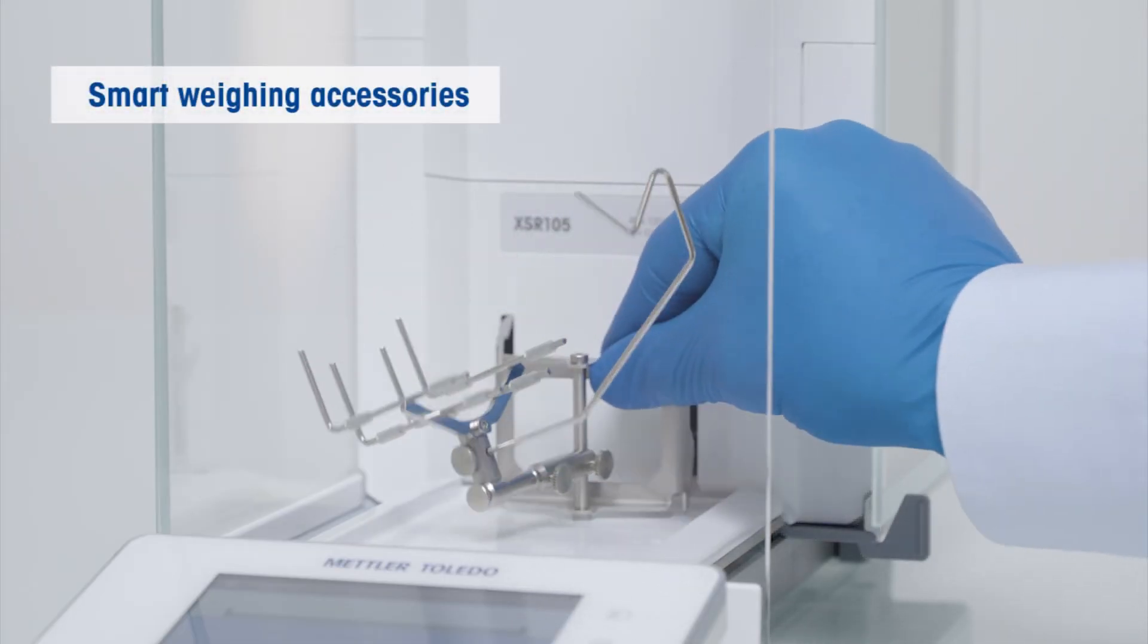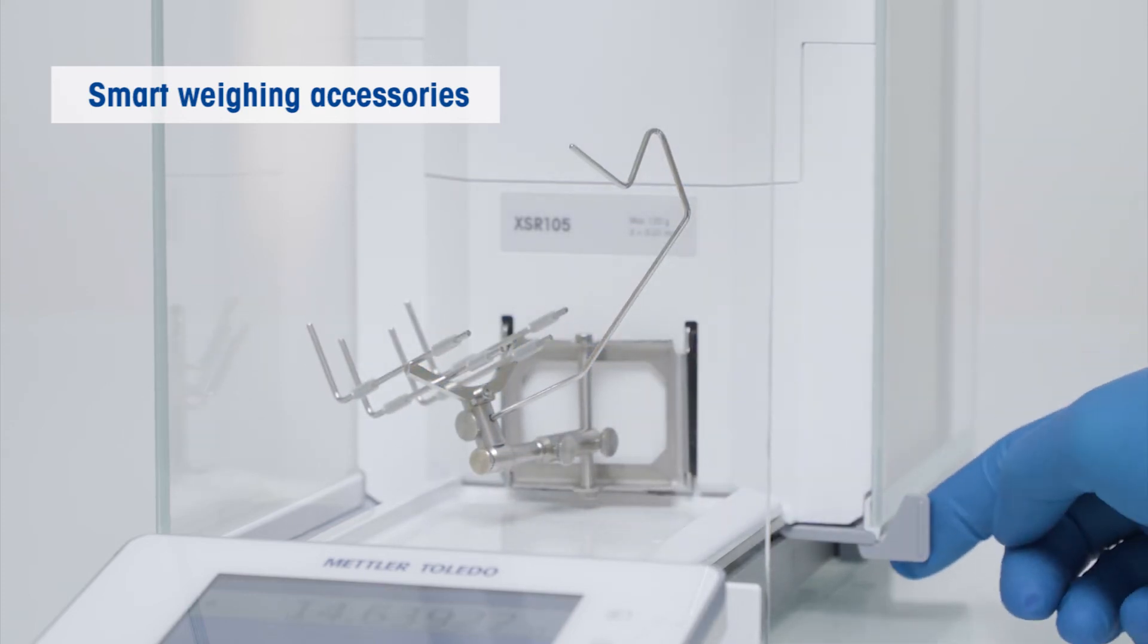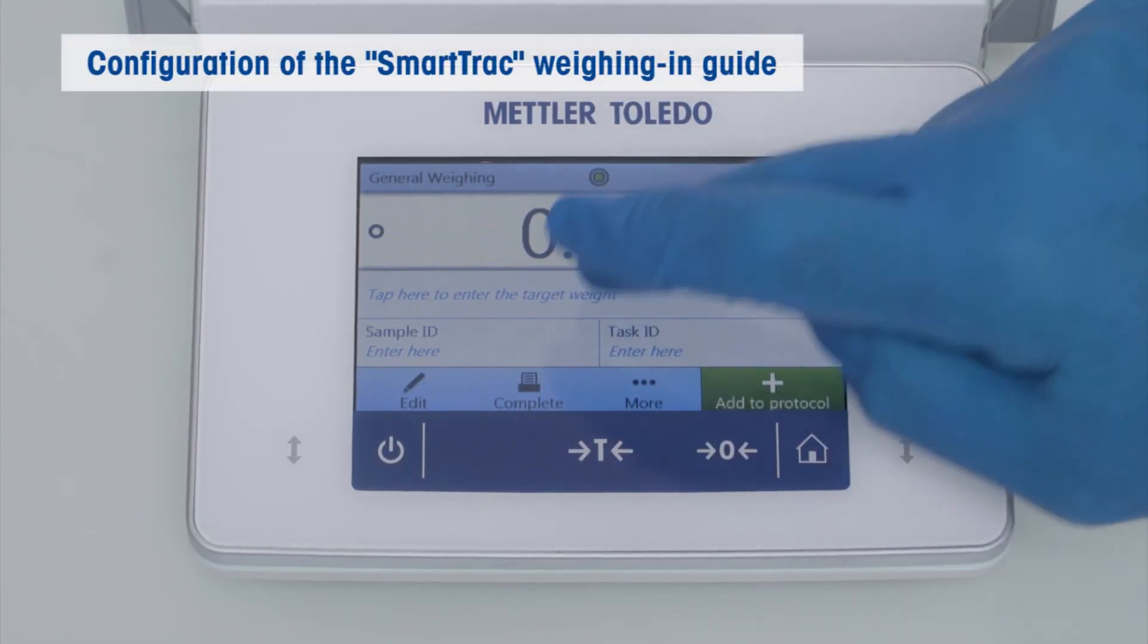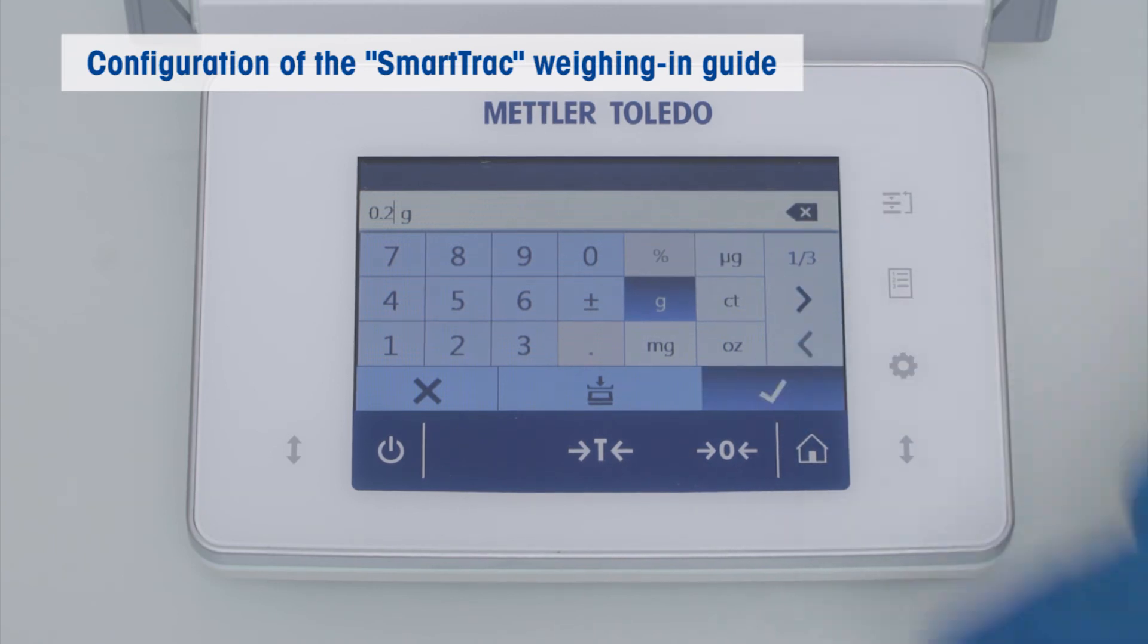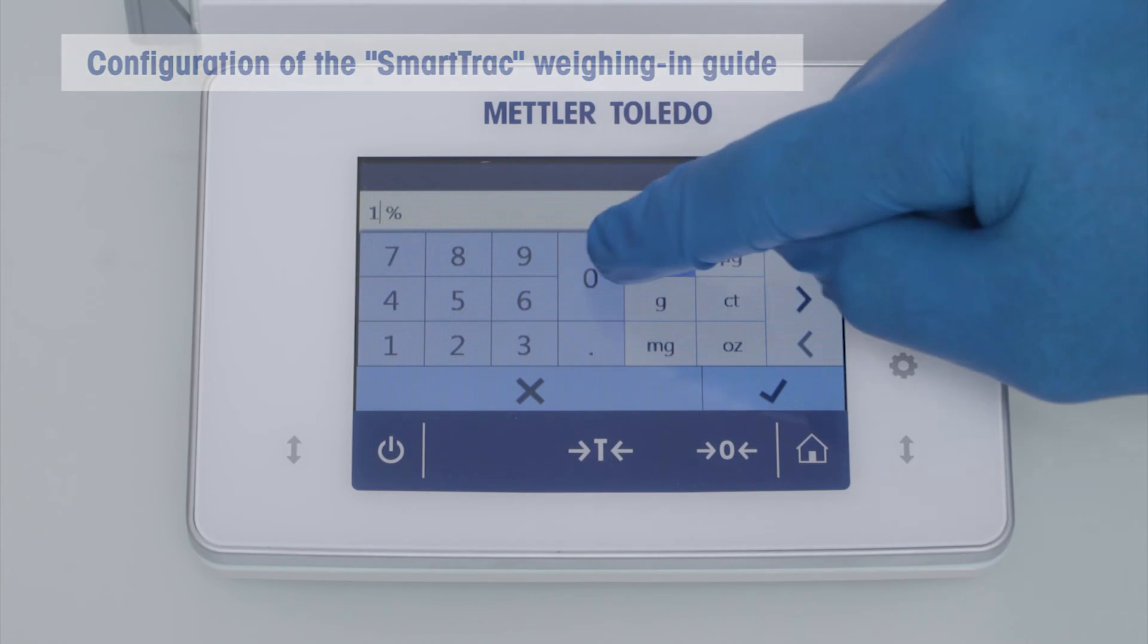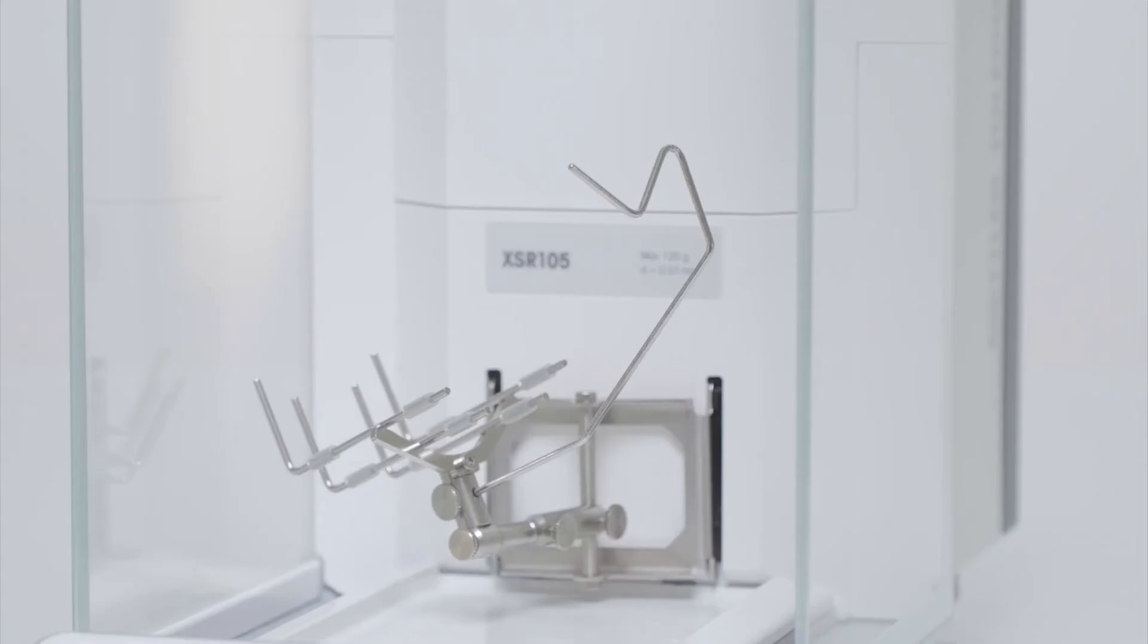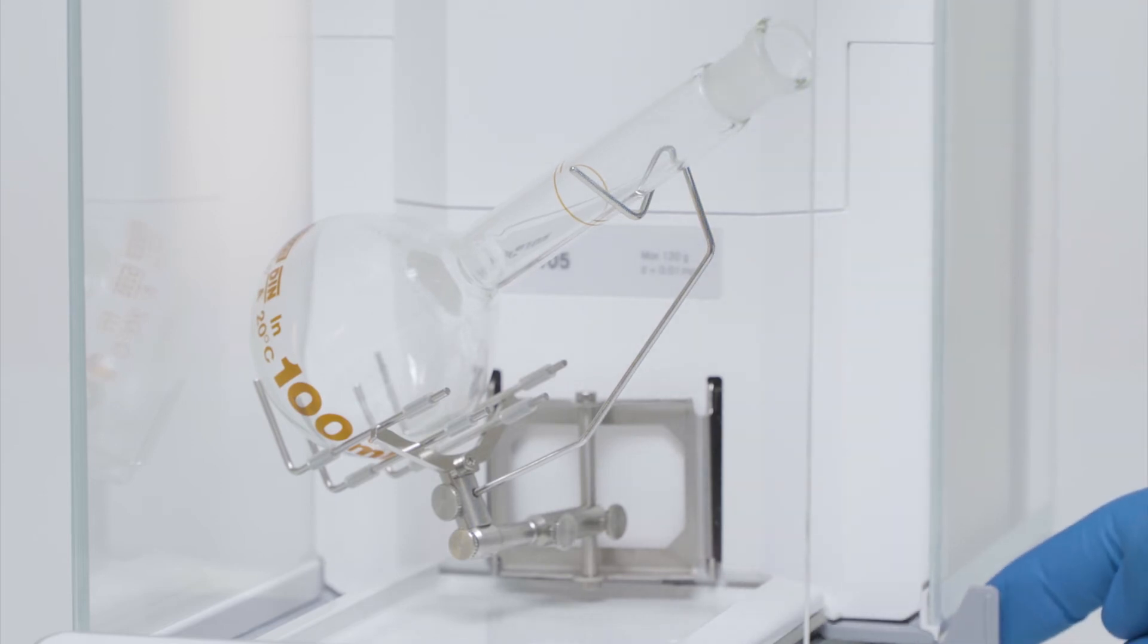So let's start weighing. To make your daily weighing tasks even more convenient, Ergoclips can be used. To zero the balance, place the tare container on the Ergoclip and tare it. Afterwards we dose in 200 mg of a substance.